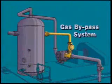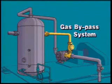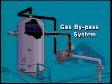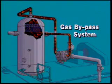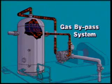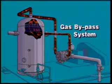The gas bypass system is made up of a series of valves and pipes that recirculate compressed vapor back through the scrubber and compressor. This is done to maintain vapor pressure at a level which keeps the compressor running until the pressure inside the stock tanks can increase.